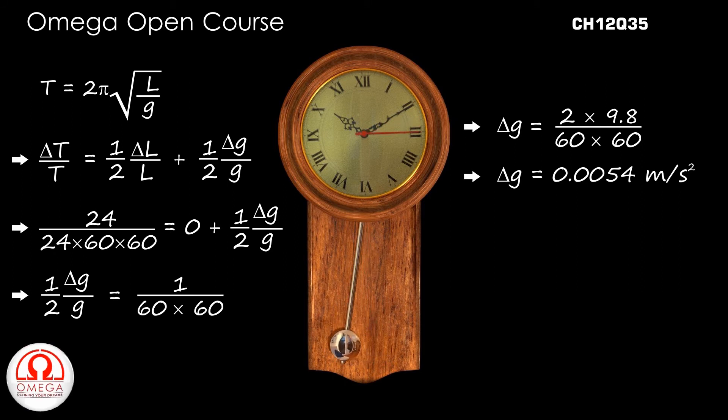This implies that at the new place, the value of g has changed by 0.0054 meter per second square. Now since the clock is losing time or slowing down, the time period of the pendulum must have increased. But since the time period is 2π√(L/g), time period will increase if g decreases. So the value of g must have decreased by 0.0054 meter per second square.